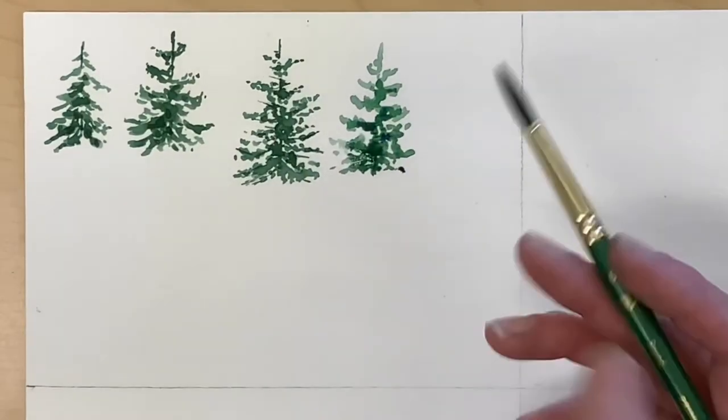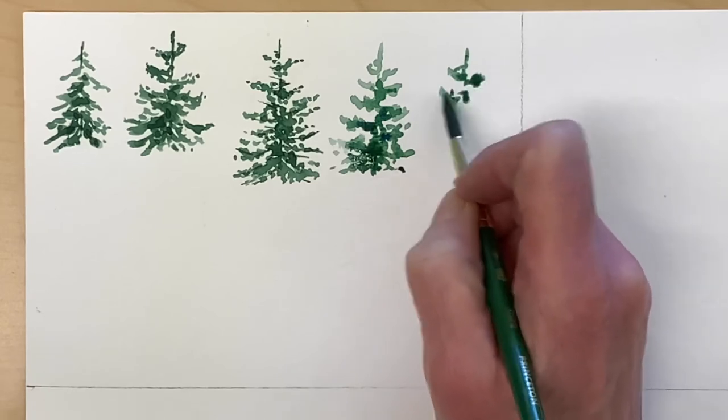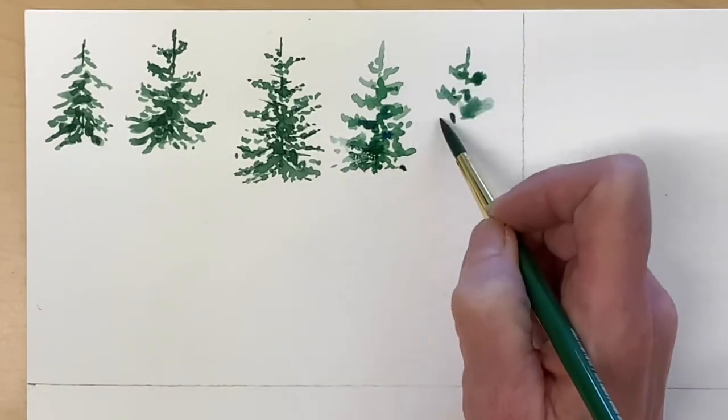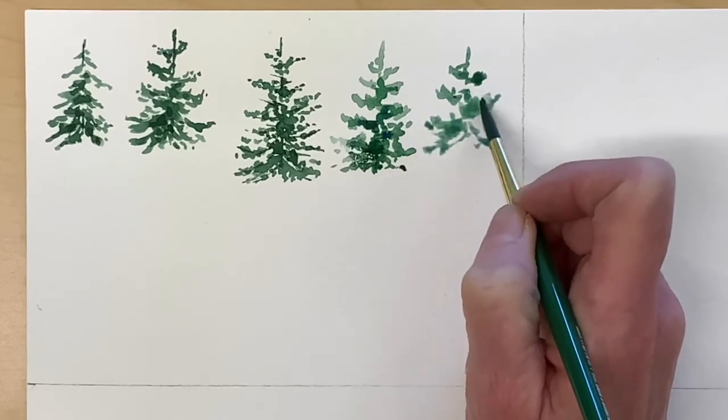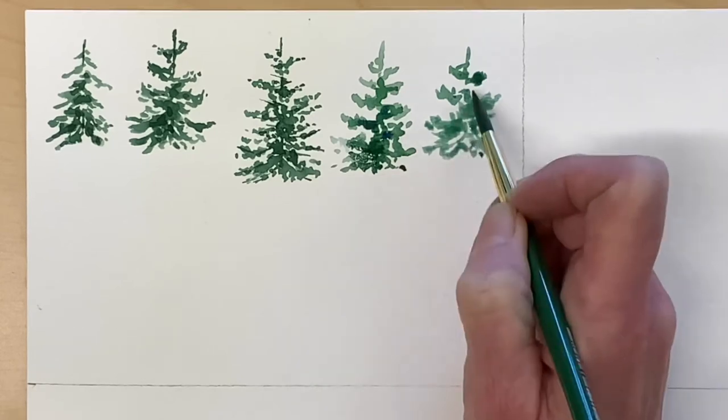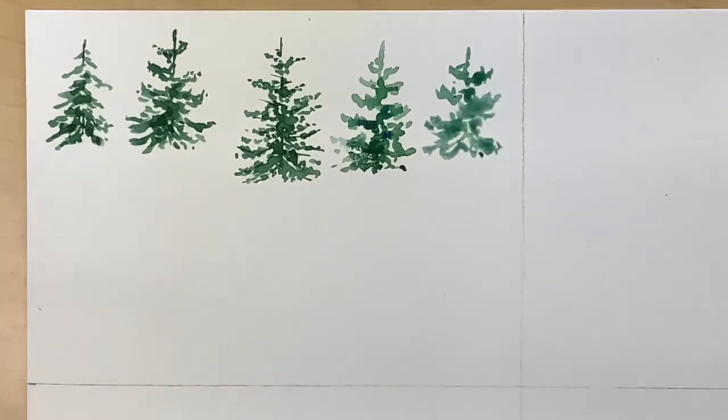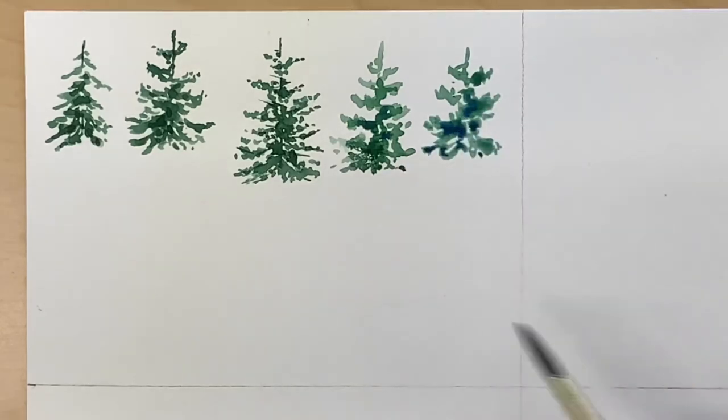I'm making one more. And I'm using the same method as the fourth tree. But I've mixed up some blue. And while this paint is still wet, I'm going to drop the blue in. Because sometimes you see trees that do have a definite blue hue to them.